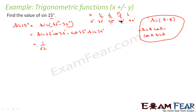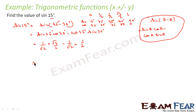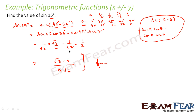sin 45° is 1/√2, cos 30° is √3/2, cos 45° is 1/√2, and sin 30° is 1/2. So we get (1/√2)(√3/2) − (1/√2)(1/2), which equals (√3 − 1) divided by 2√2. That is the answer for sin 15°. We wanted the value of sin 15°, knew 45° and 30°, wrote sin 15° = sin(45°−30°), expanded using the formula, and got the answer.